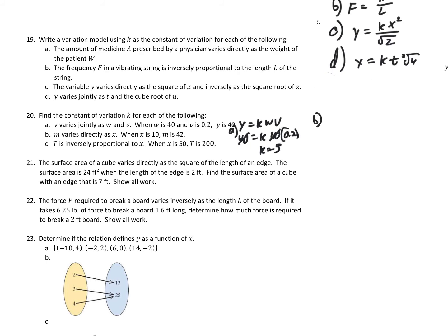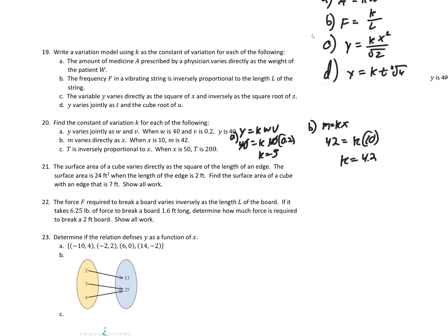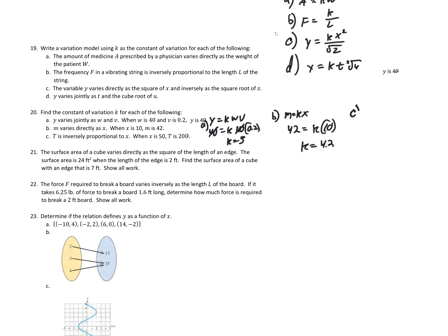For Part B: M varies directly as X, so M equals K times X. Given X equals 10 and M equals 42, we get 42 equals K times 10, so K equals 4.2. For Part C: T is inversely proportional to X, so T equals K over X. Given X equals 50 and T equals 200, we get 200 equals K over 50, so K equals 10,000.